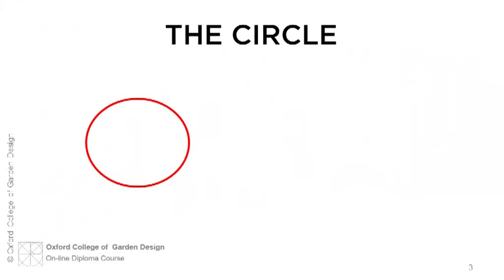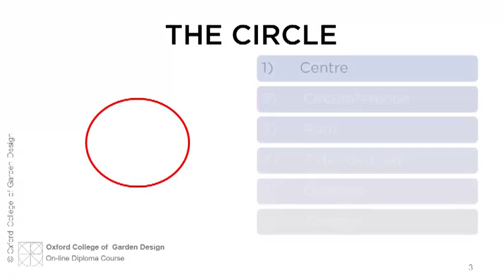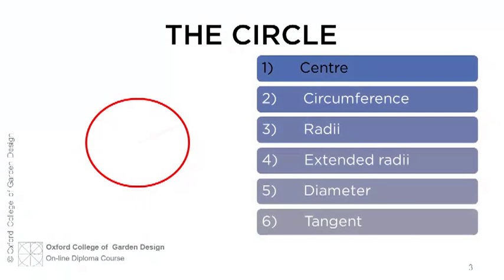The circle has a number of component parts that are vital to its use in design composition. The component parts of a circle represent the center, the circumference, the radii, the extended radii, the diameter and most dangerous of all, the tangent.